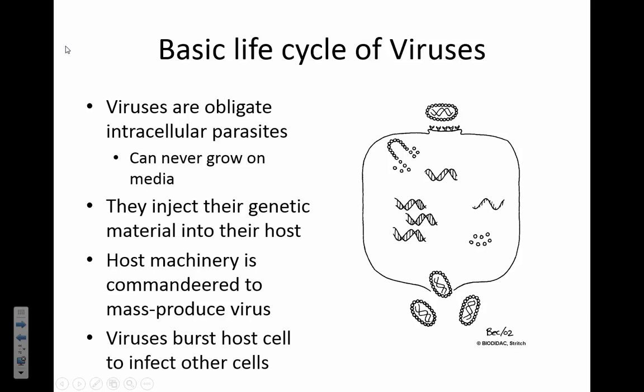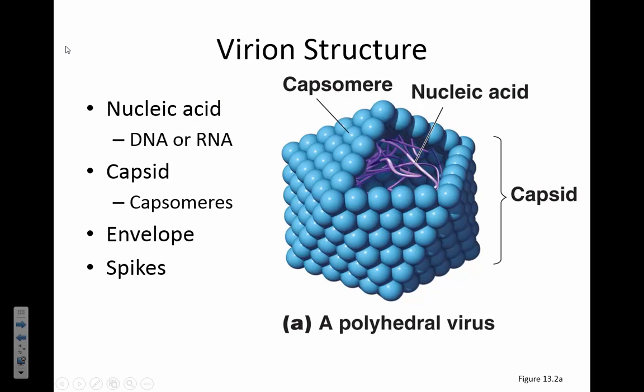Viruses inject their genetic material into a host. The host machinery is commandeered—taken over—to mass produce the virus. When a pirate pushes away the captain of the ship and takes the wheel, he has commandeered that vessel. When the viral genome gets in, it pushes away the host genome and says, 'You're reading this DNA now.' The viral genome tells the cell to produce more viruses. The cell fills up, and what happens? It bursts, releasing more viruses. That's the lion's share of what viruses are all about.